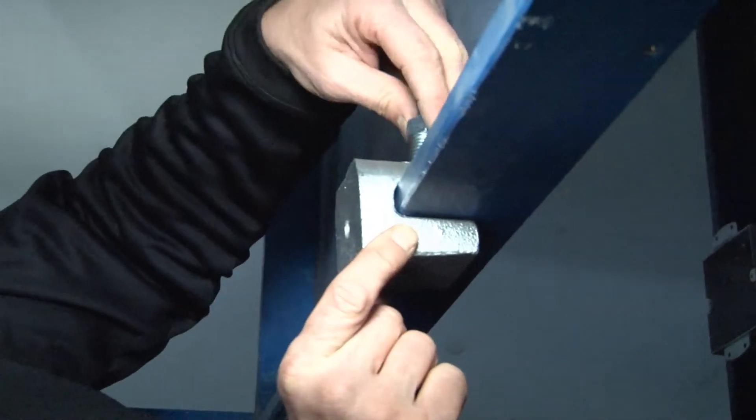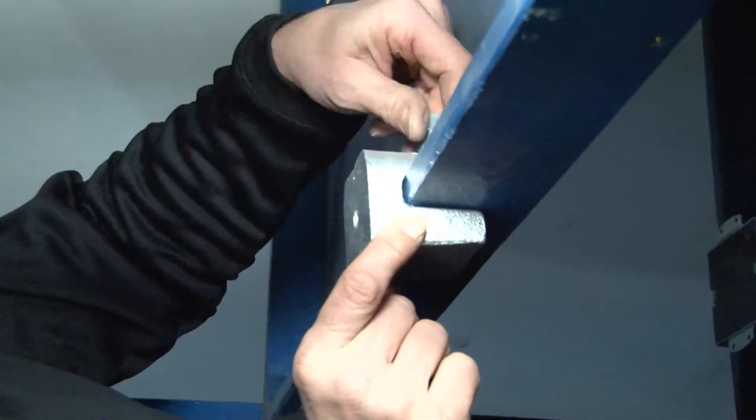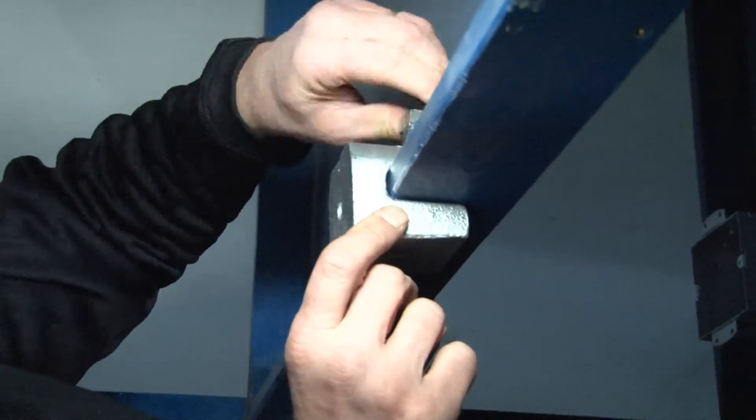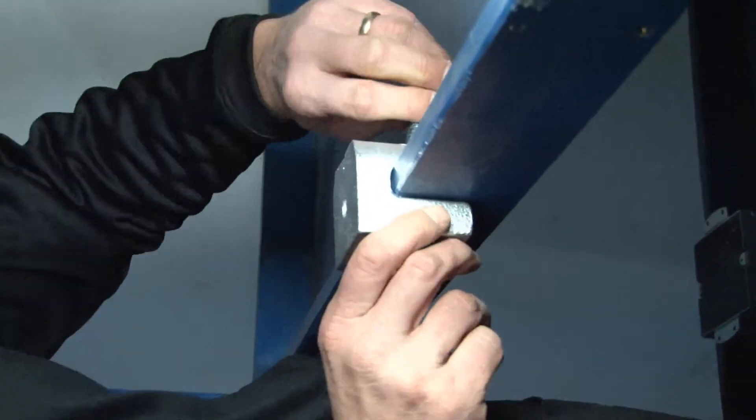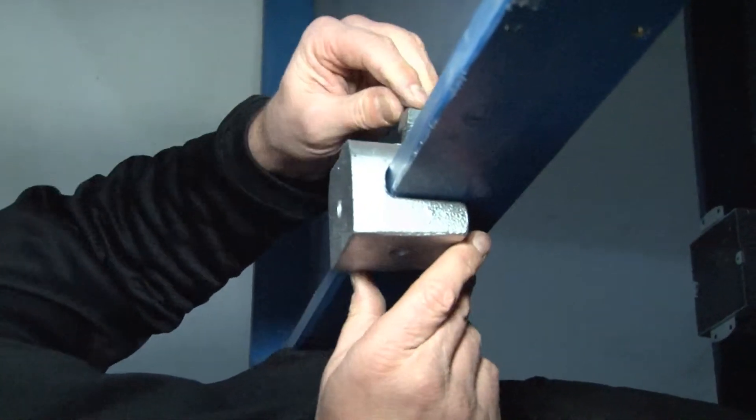You then can tighten down the set screw using a pair of channel locks, pliers, or a heavy duty wrench. Be sure and tighten it extra secure. That cup point screw will bite on the beam and prevent it from walking off over time.